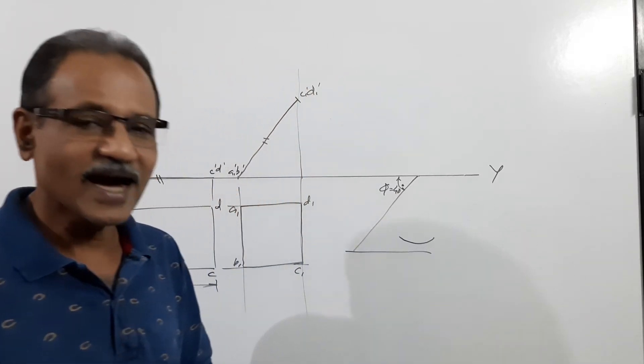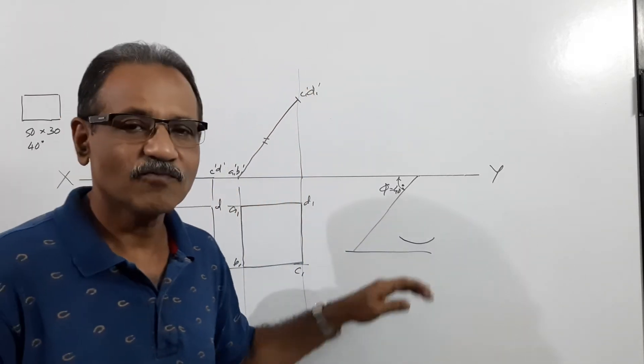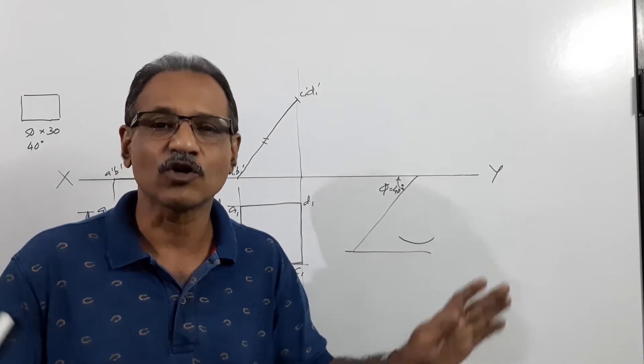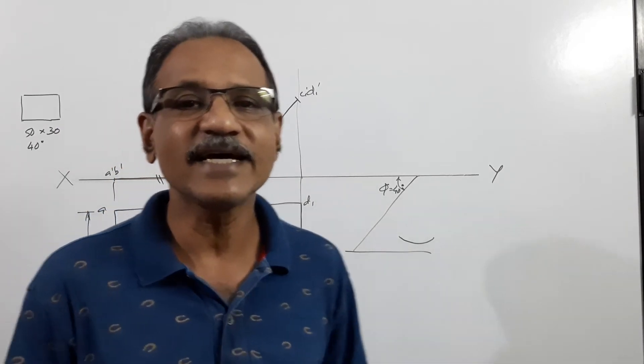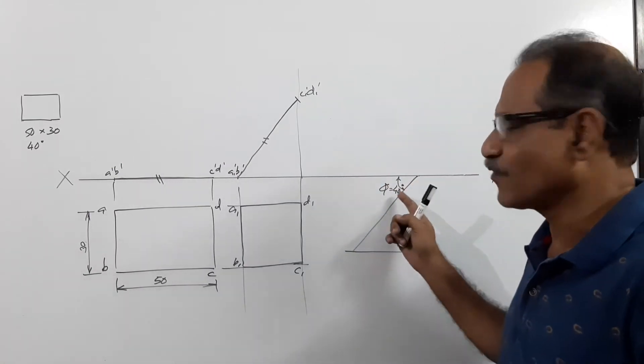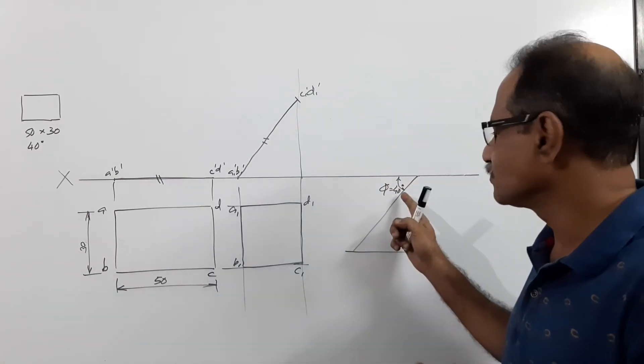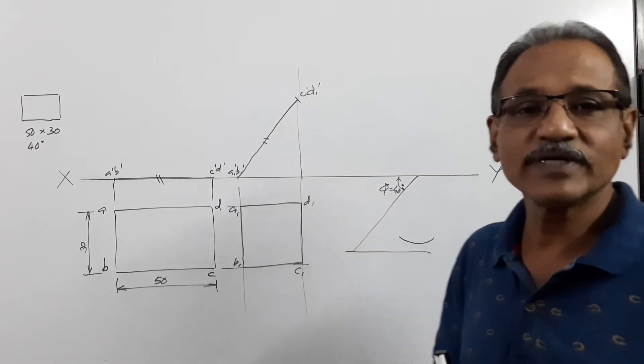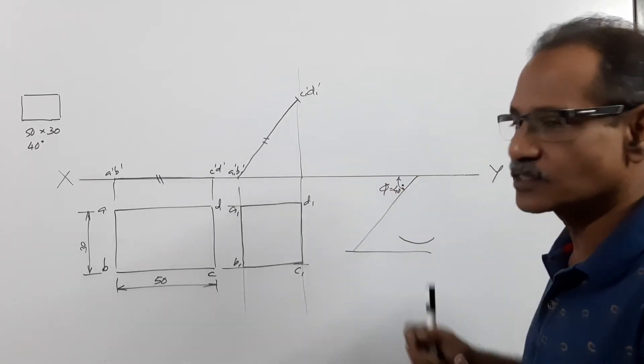Unfortunately the arc will not cut this line. But does it mean the question is wrong? This is a wrong question. That is, the value of phi of the line given is 40 degrees which is wrong. With the 40 degrees it will not cut this.